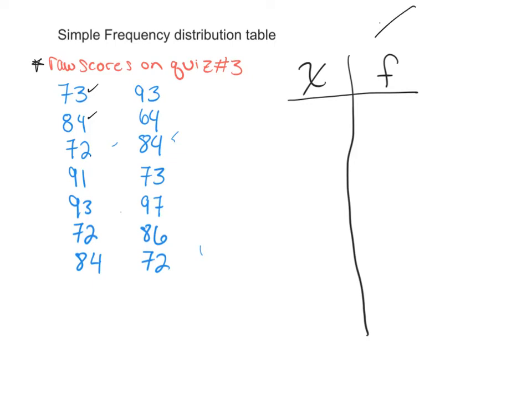Over here, we're going to start creating our frequency distribution table. Again, a quick summary on symbols. X means raw score, whatever that raw number is. F is just a symbol for frequency.